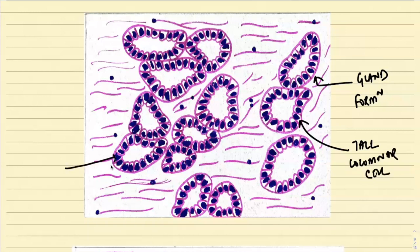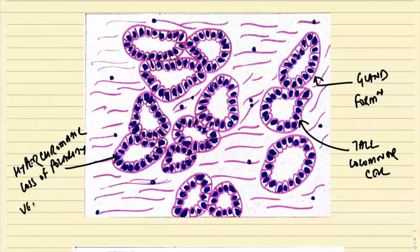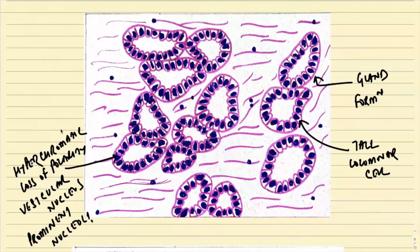If you look at the individual nucleus, they are actually hyperchromatic with a loss of polarity. They are having a vesicular nucleus with prominent nucleoli. Also, these cells are highly pleomorphic in nature.